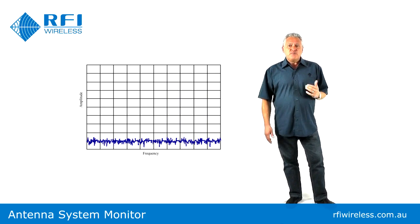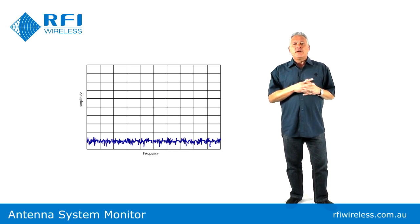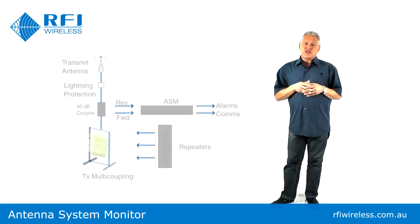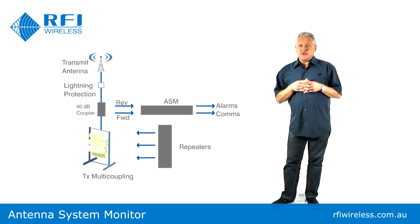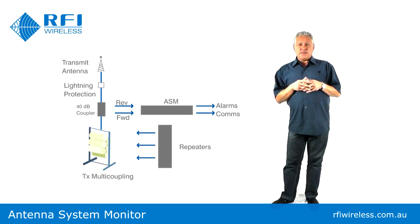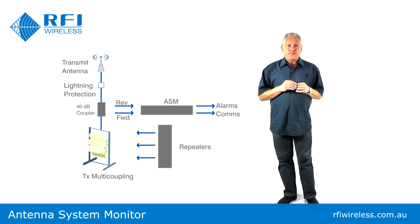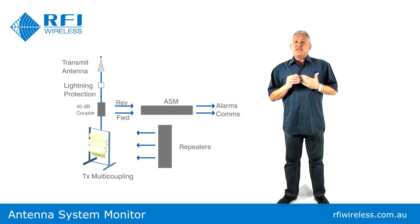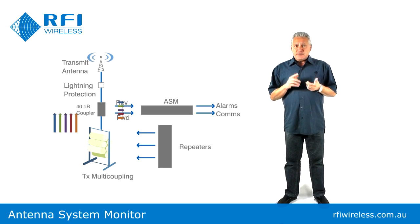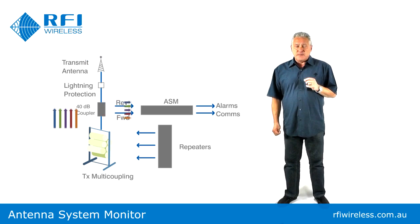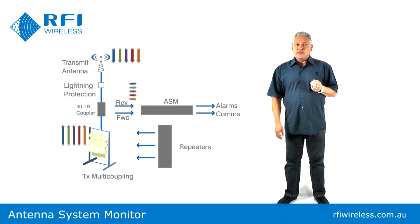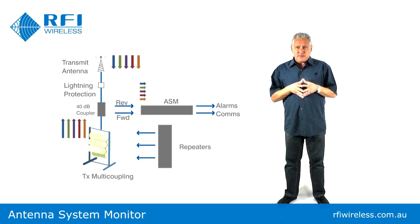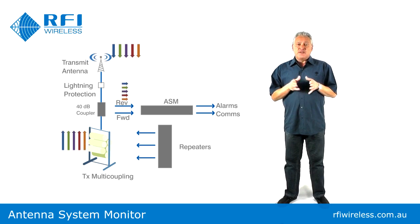So let's examine how the ASM monitors the transmitter side of the radio communications facility first. The ASM is used in conjunction with a high-directivity dual-directional coupler placed in between the transmitter combiner output and the antenna feeder cable. The coupler provides the source of the forward and reflected signals which allow the ASM to measure the forward power and the reflected power in each of the program channels on the combiner, and hence compute the return loss or VSWR for each of the program channels.